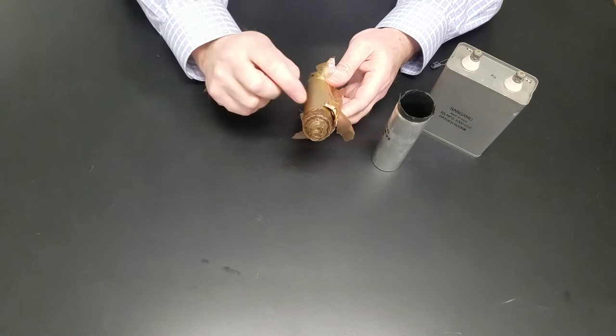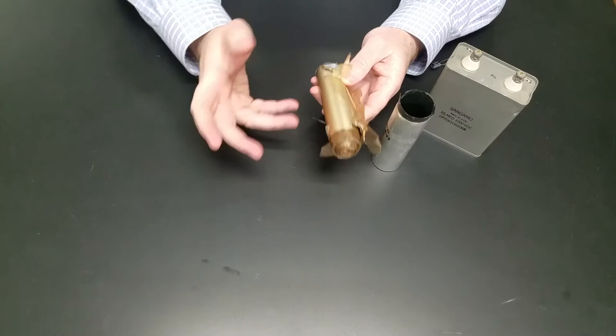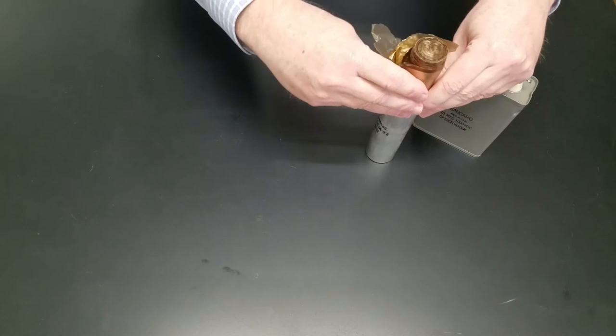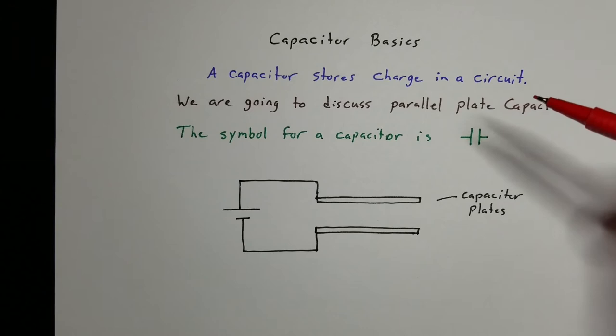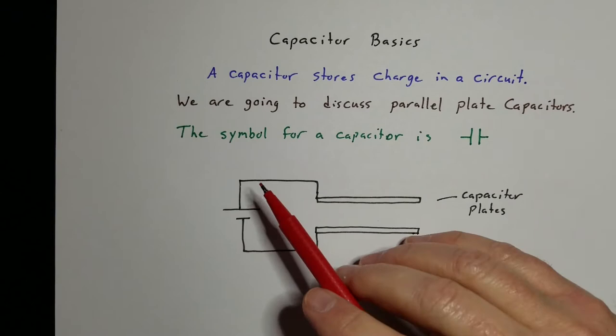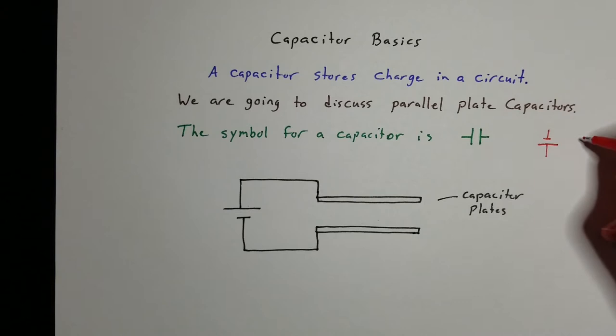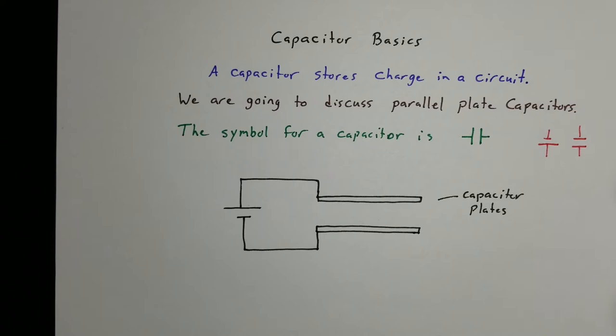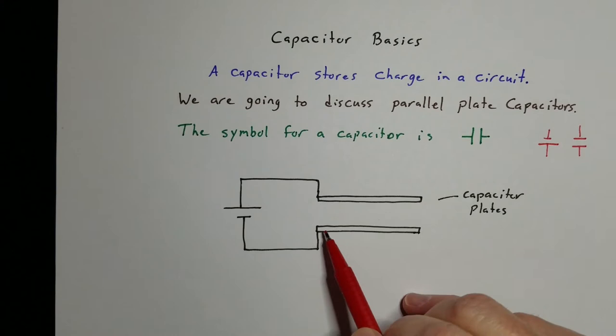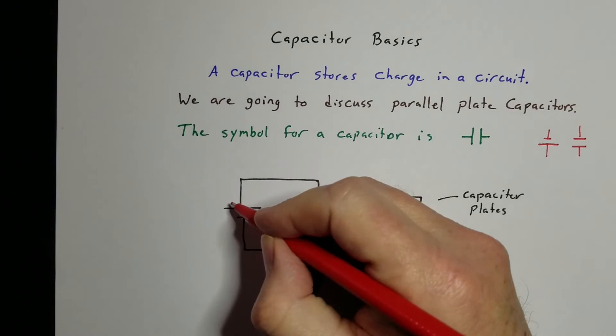Let's get started with figuring out how these capacitors work and how to do some calculations with them. A capacitor stores charge and we're mostly going to talk about a parallel plate capacitor. Its symbol inside a circuit is two parallel lines, not to be confused with a battery, which has a short and a long line. A parallel plate capacitor has two equal lines. We've got two metal plates — this is one metal plate, this is another — and the battery's long side is positive and the short side is negative.